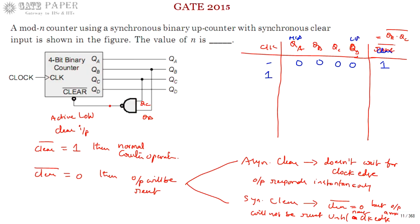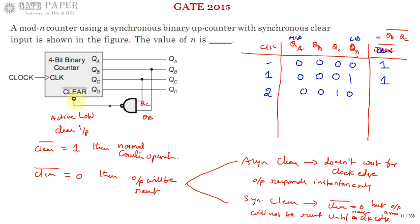Applying the first clock pulse: count goes up to 0001. Check the reset bar — since QB and QC are both zero, the NAND output is 1, so clear bar remains 1 and counting continues. Second clock pulse: count becomes 0010. The NAND gate output is zero only when both inputs are at logic 1.